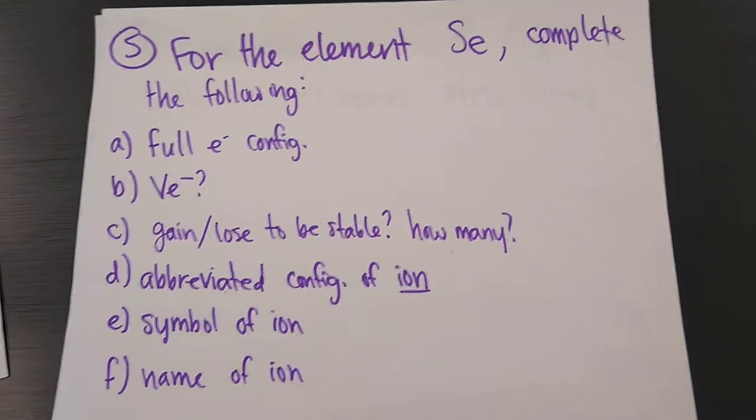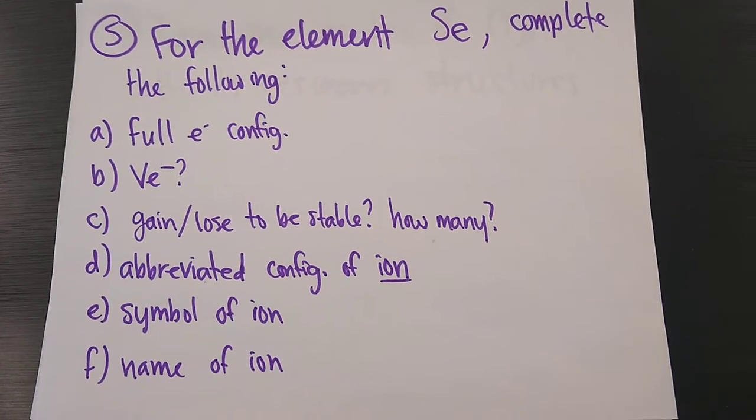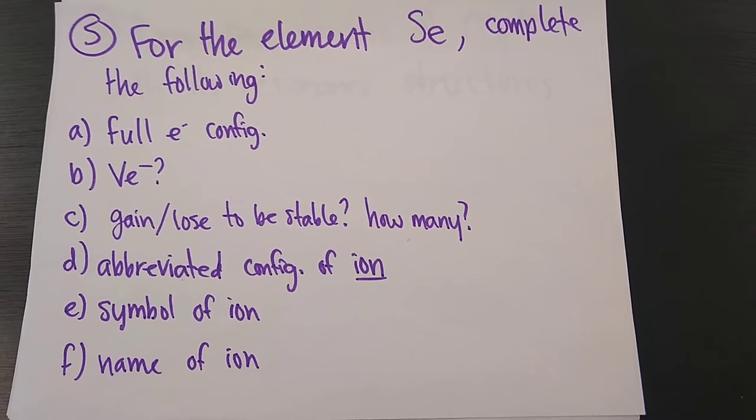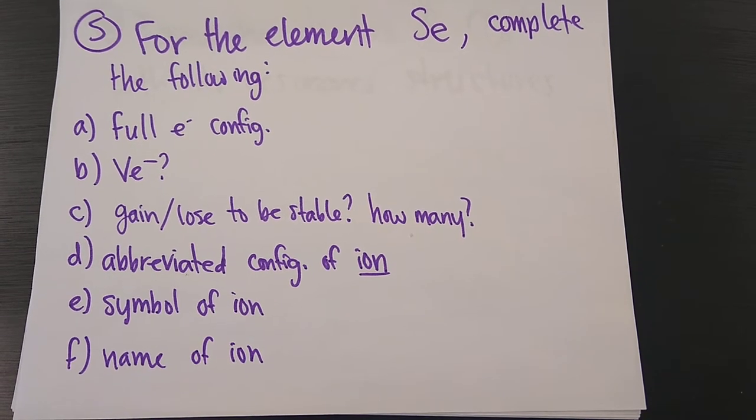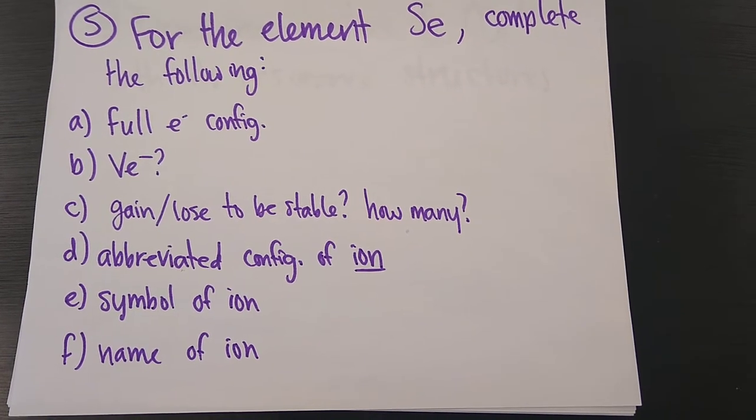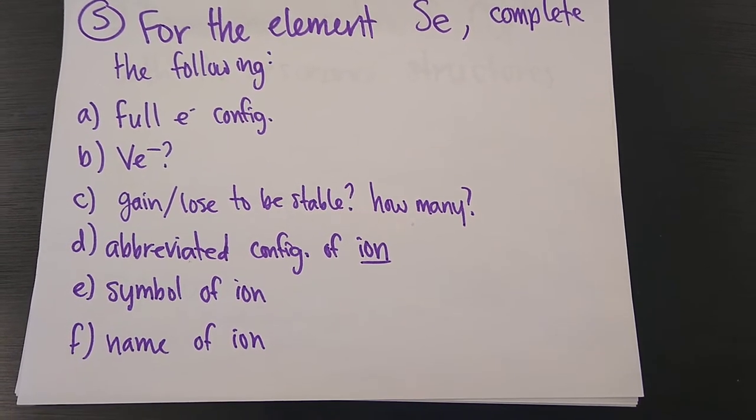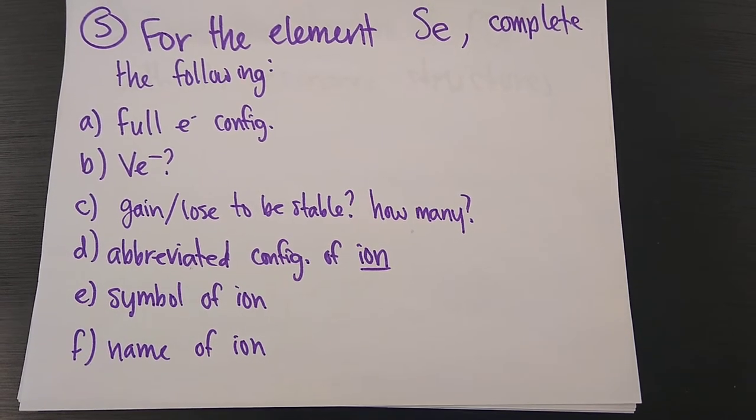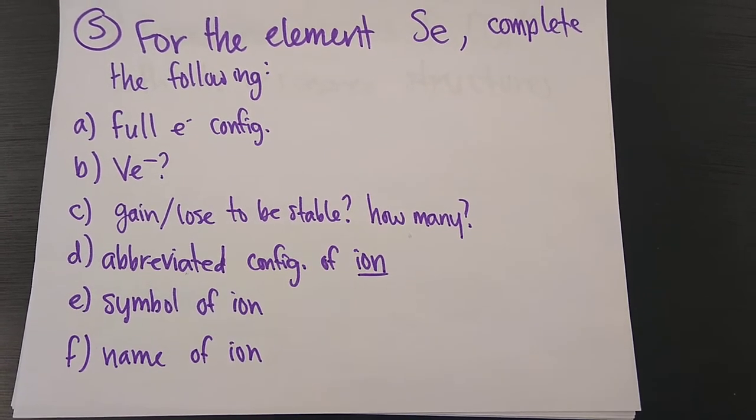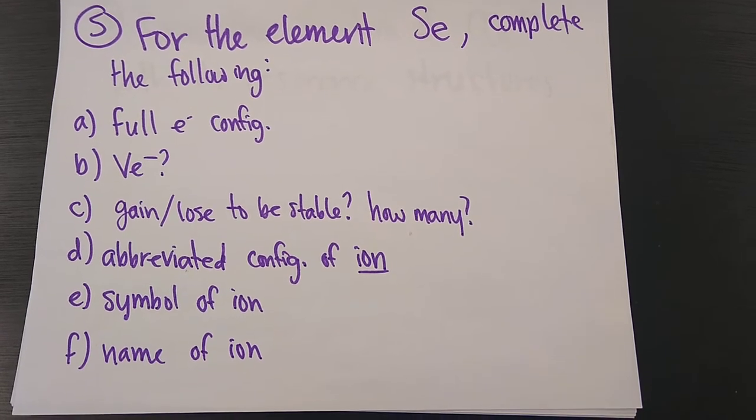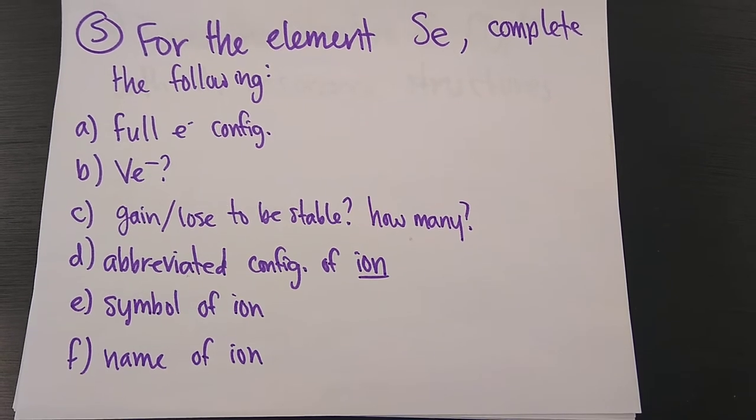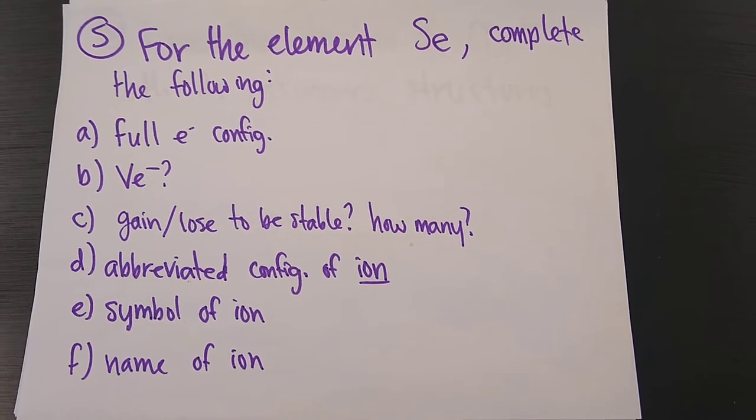Alright, number five, for the element SE, complete the following. Write its full electron configuration. Determine how many valence electrons it has. Part C is, is it going to gain or lose electrons to be stable? And how many? Part D, abbreviated electron configuration of the ion. So after it does whatever you said in part C, what is its abbreviated electron configuration? Part E, what is the symbol of the ion after it does part C? And finally part F, what is the name of the ion? Okay, if you don't remember this stuff, go back to chapter seven.